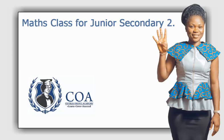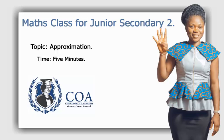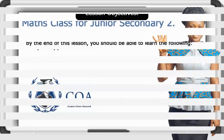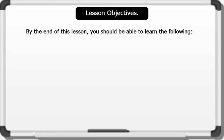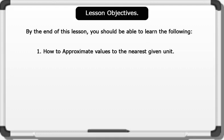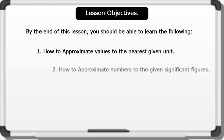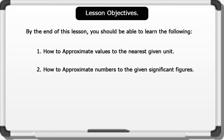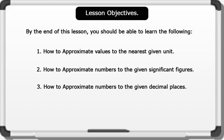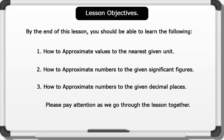Welcome. Our topic for today's lesson is Approximation. Lesson duration is 5 minutes. Let's check out the lesson objectives. By the end of this lesson, you should be able to learn: 1. How to approximate values to the nearest given unit. 2. How to approximate numbers to the given significant figures. 3. How to approximate numbers to the given decimal places. Please pay attention as we go through the lesson together.